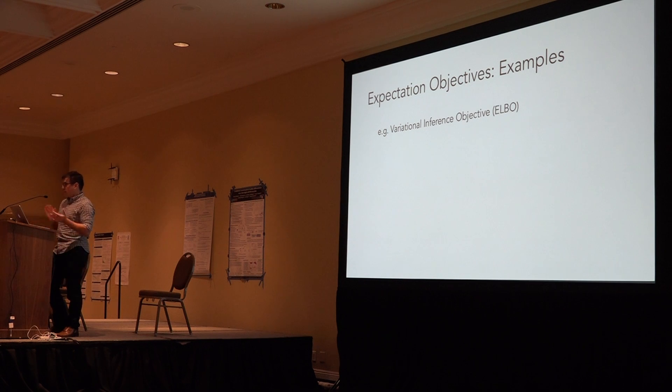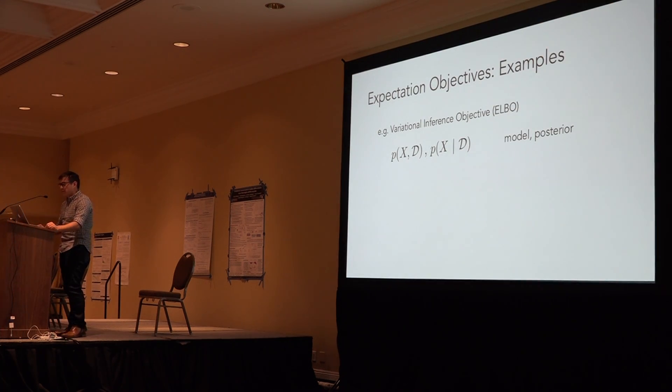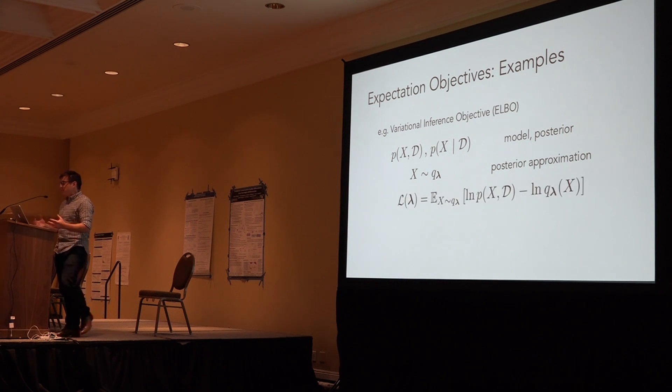As a concrete example, let's take variational inference. Say we have some model p of x given data d. This is a posterior distribution p of x given data. In variational inference, we introduce this variational distribution q, parameterized by lambda, which is a distribution over x space. And then the optimization objective is this expectation with respect to q. So the expectation with respect to q of the log joint, minus the log approximation density. Being able to estimate this quantity, especially when the expectation is intractable, is important in variational inference.